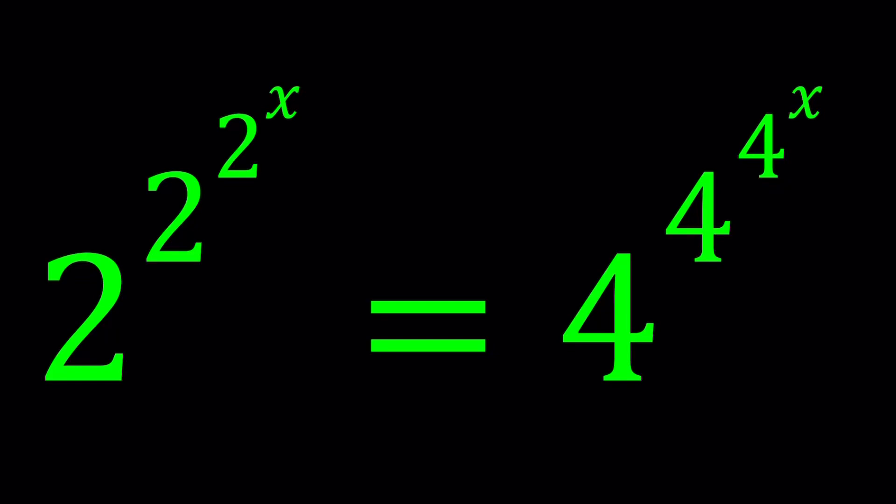In this video, we're going to be solving a very exponential equation. So we kind of have like two towers: 2 to the power 2 to the power 2 to the power x equals 4 to the power 4 to the power 4 to the power x.